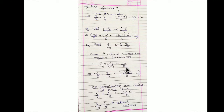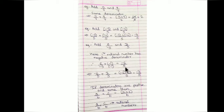Now we add minus 6/5 and 3/5. The denominators are the same, so we add the numerators: minus 6 plus 3, which equals minus 3. So the required rational number is minus 3/5.